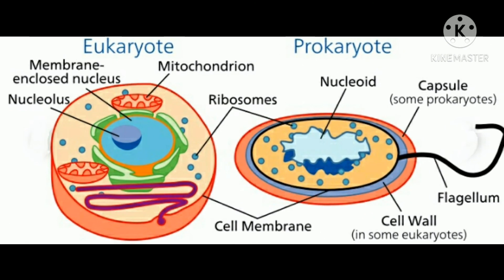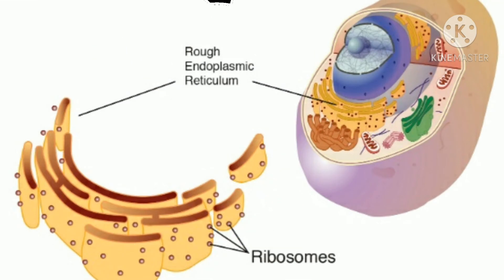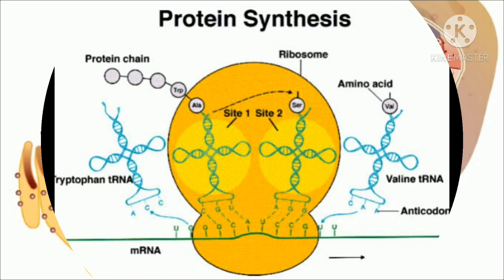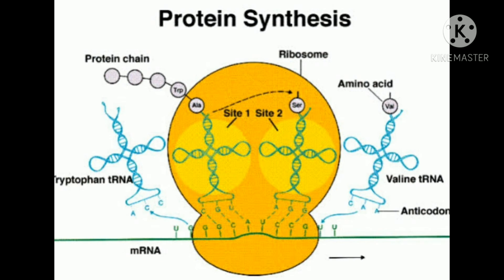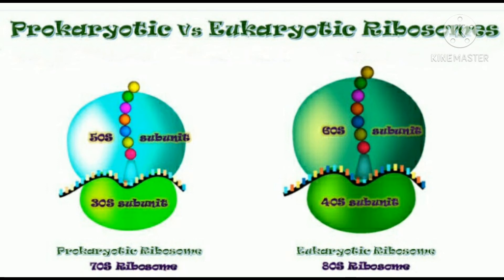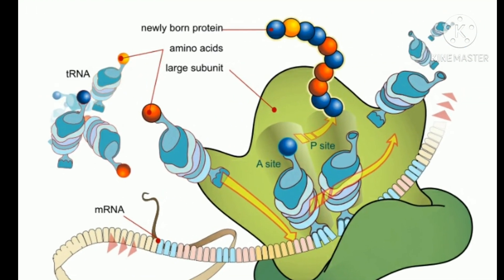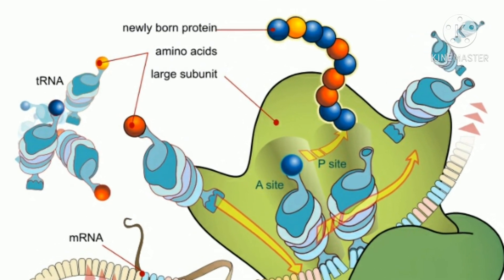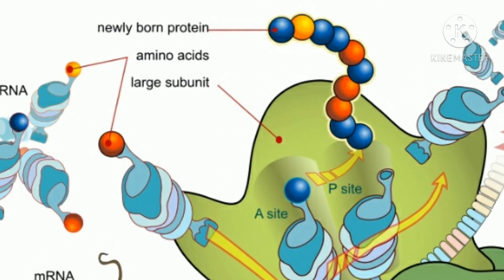Ribosomes. Both eukaryotic and prokaryotic cells possess ribosomes, which are non-membranous particles on which the proteins of the cell are manufactured. Even though ribosomes of prokaryotic and eukaryotic cells have considerably different dimensions, these structures participate in the assembly of proteins by a similar mechanism in both types of cells.